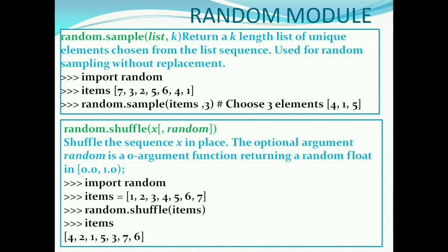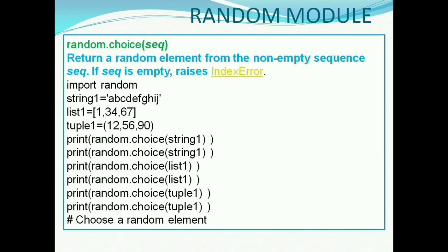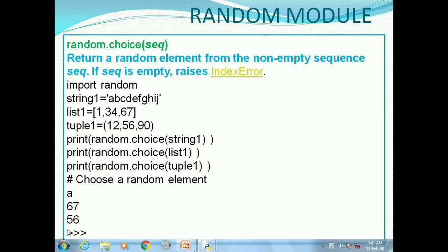random.choice will generate a random element from a non-empty sequence. The sequence may be tuple, string, or list. If the sequence is empty, it raises an error, IndexError. Here, string1 is equal to abcdefghij and random.choice string1 will generate any number between this sequence.